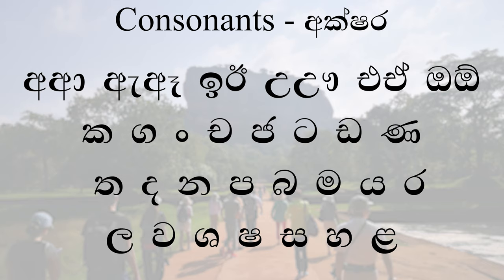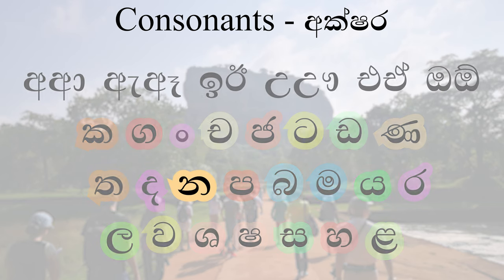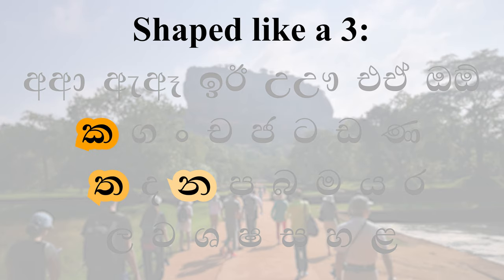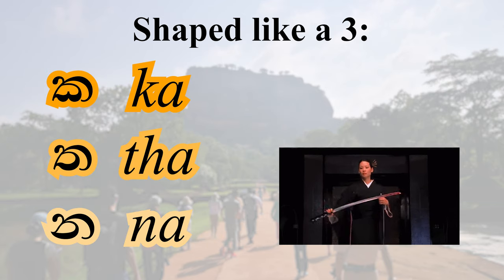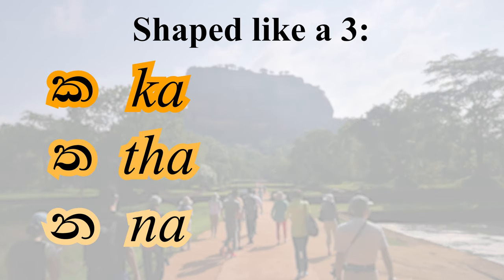To the untrained eye, Sinhala characters all look the same. However, we shall divide the consonants into groups with similar shapes, using the learning process. The 'na' we learned before, together with 'k' and 'ta', form the first group — letters shaped like a sleeping number 3. K, ta, and na are all shaped like a 3 — can you see it? K is the most striking.